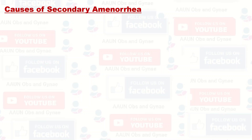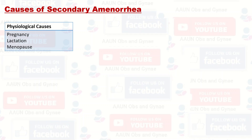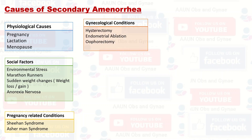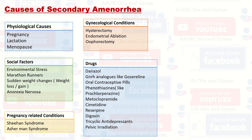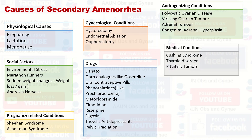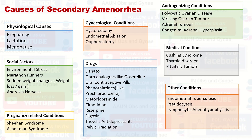Here we have a complete list of all those causes — the 8 main causes: physiological causes (pregnancy, lactation, menopause); social factors (environmental stresses, marathon runners, sudden weight changes, anorexia nervosa); pregnancy-related conditions (Sheehan syndrome, Asherman syndrome); gynecological conditions (hysterectomy, endometrial ablations, oophorectomy); drugs (danazole, GnRH analogues like goserelin, oral contraceptive pills, phenothiazines, metoclopramide, cimetidine, reserpine, digoxin, tricyclic antidepressants, pelvic irradiations); androgenizing conditions (polycystic ovarian disease, virilizing ovarian tumor, adrenal tumor, congenital adrenal hyperplasia); medical conditions (Cushing's syndrome, thyroid disorders, pituitary tumors); and other conditions (endometrial tuberculosis, pseudocyesis, lymphocytic adenohypophysitis).